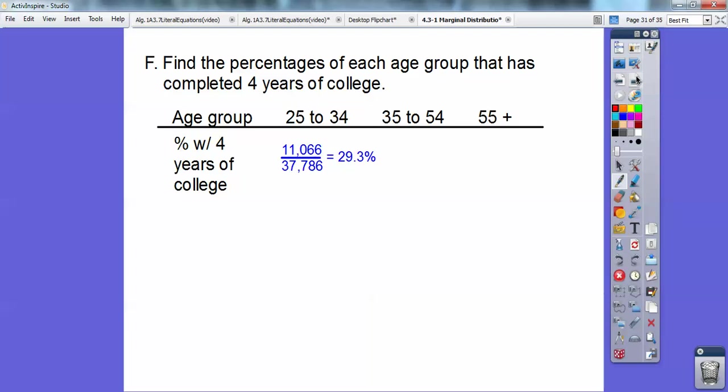Okay, so four years of college, you're going to go over there, the 25 to 54, and you're going to scroll down. Four years of college, I see the 11 million, and then, of course, their total for just that age group is that 37 million. Okay, so for the 35 to 54, you guys,